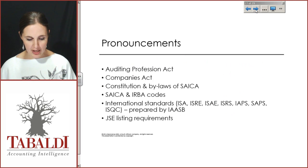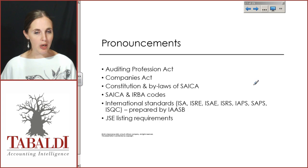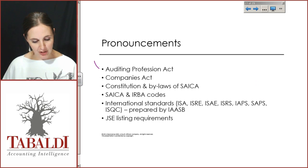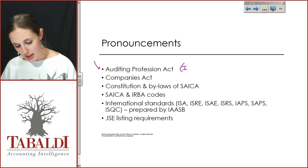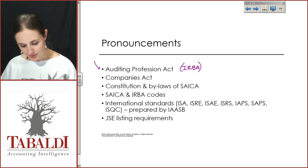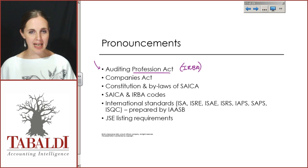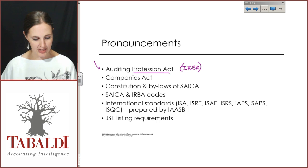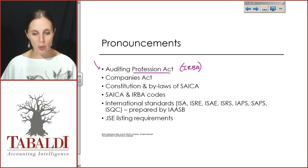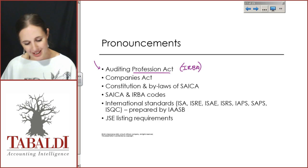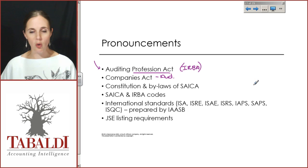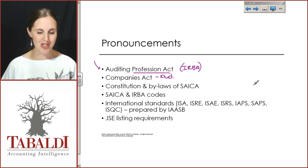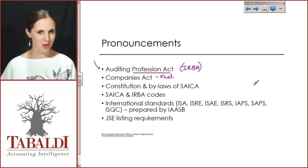The key pronouncements you need to be aware of include the Auditing Profession Act (APA), set by IRBA as the regulatory body for auditors in South Africa. The APA governs how we behave as auditors and our responsibilities and duties. We are also bound by the Companies Act, which governs our clients and determines when auditors are required — including the public interest score and statutory requirements of auditors.